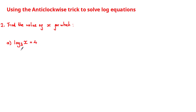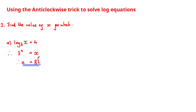We can solve this equation by expressing it as a power equation using the anti-clockwise trick. Starting with the base of 3 and going anti-clockwise, we get that this equation is equivalent to 3 to the power of 4 is equal to x. Since 3 to the power of 4 is equal to 81, it follows that x is equal to 81.